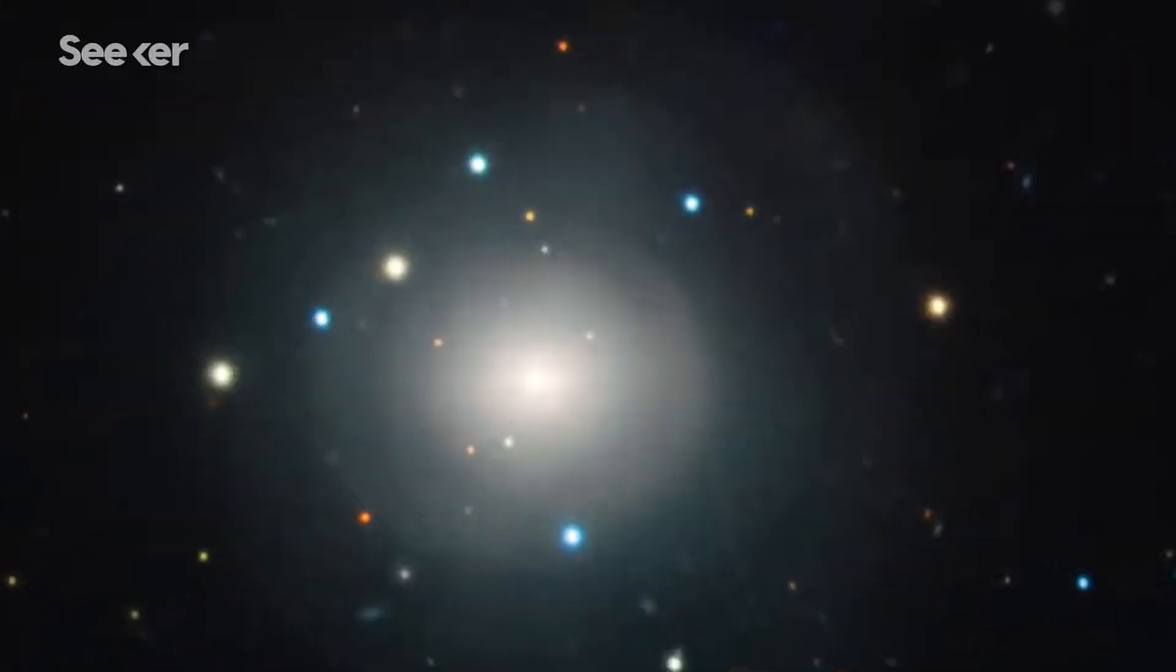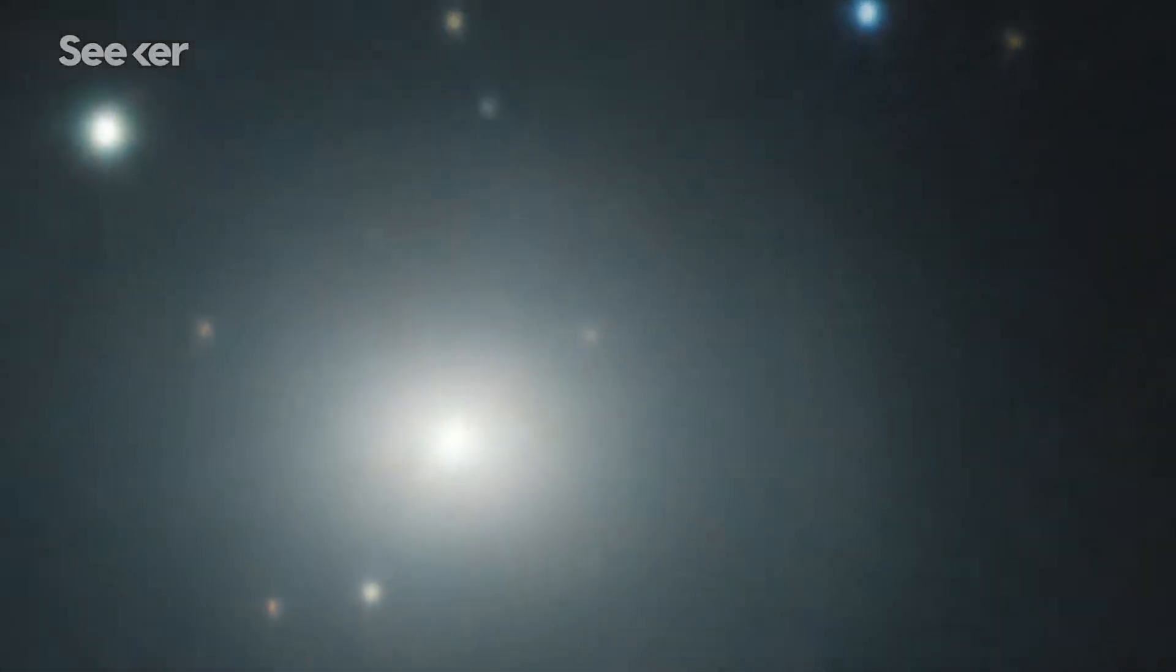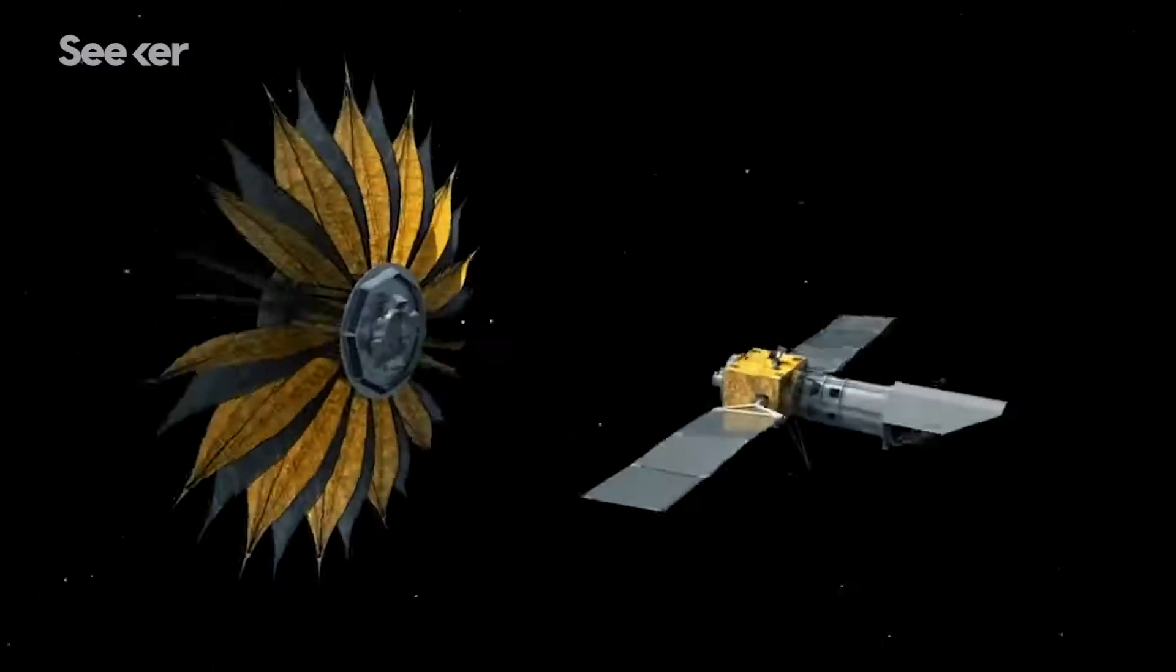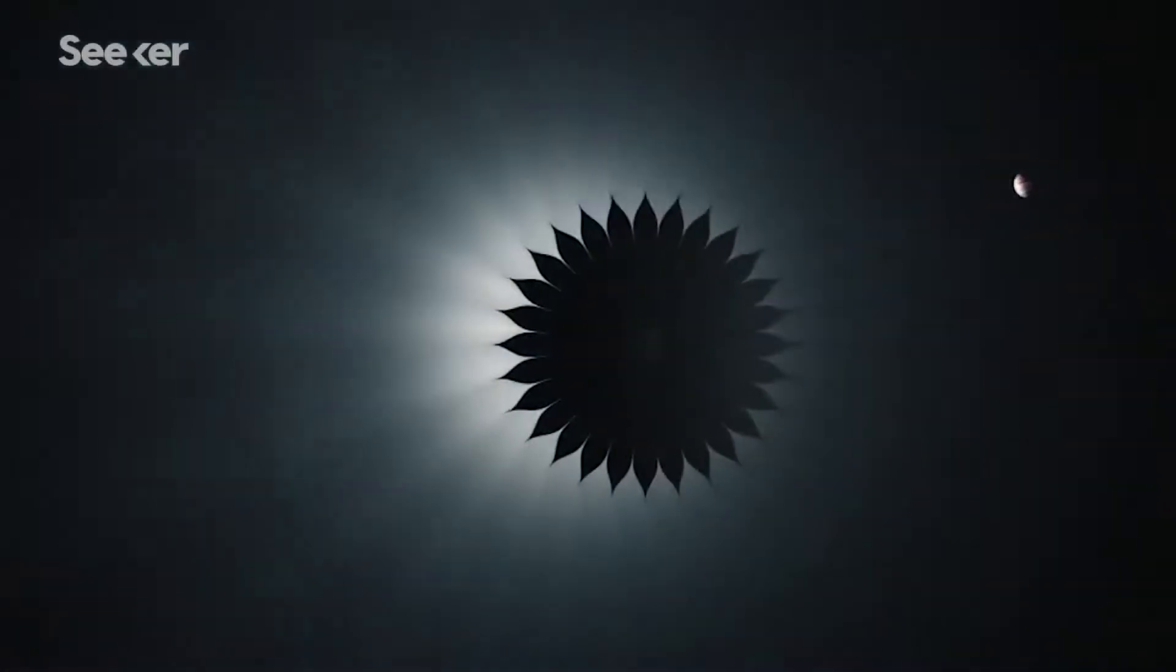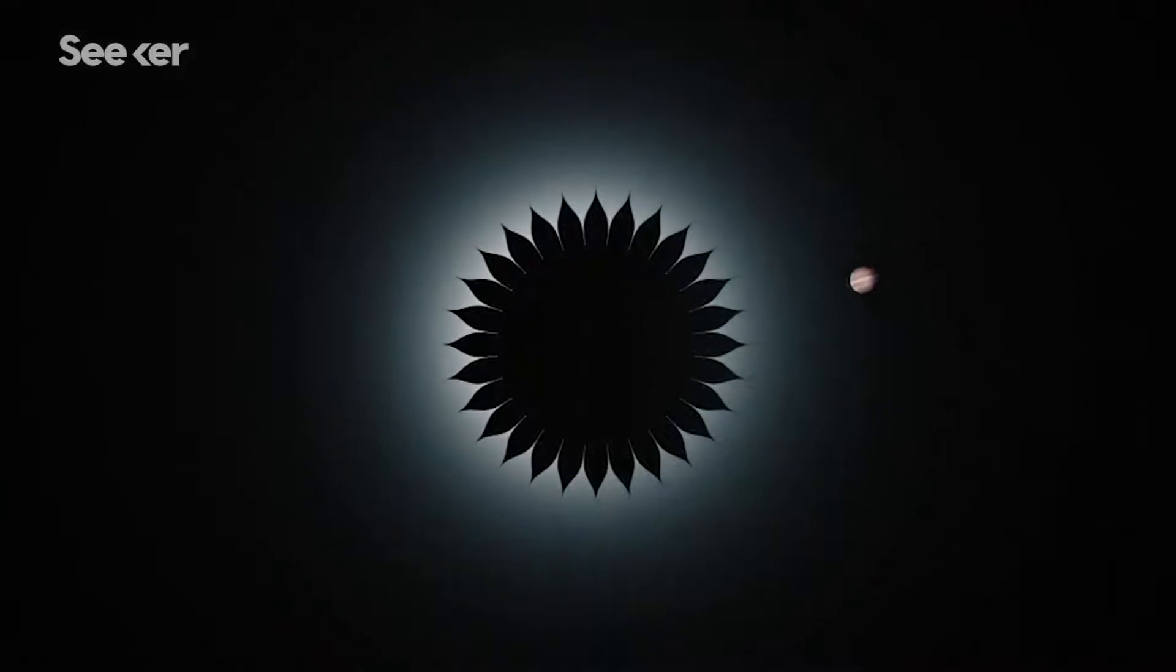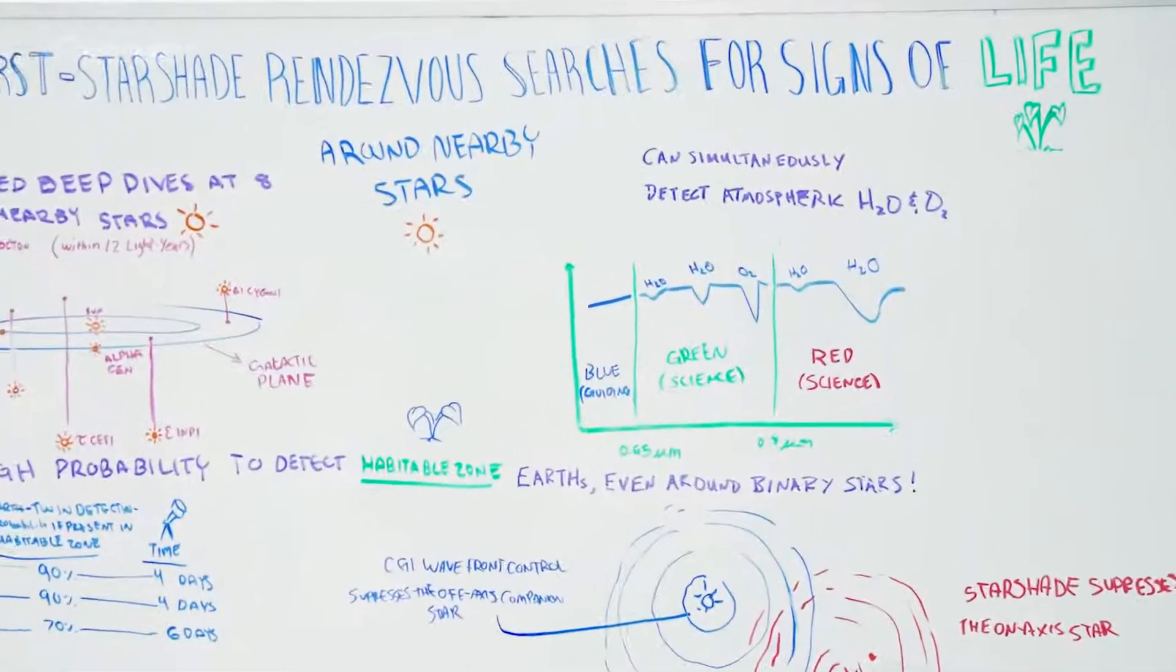For an Earth-sized exoplanet orbiting a sun-like star, they can't be imaged in detail because the stars they circle are much brighter than they are. This is where the starshade comes in, to help block that bright light to better help astronomers learn more about these mysterious planets and look for biosignatures for life.